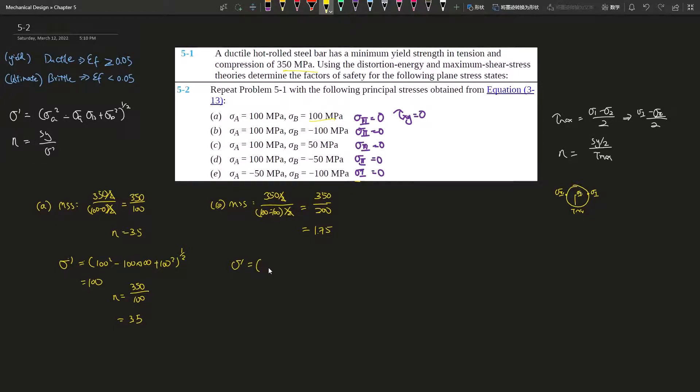Okay. Keep going with our calculation. Still, 100 squared minus 100 times negative 100, again, plus negative 100 squared, square root. That's going to give you 173.2 megapascals, and then n equals 350 divided by what we got, 173.2, right? And you will get a factor of safety, 2.02, and as you can tell, that this is bigger than this one, right? For me, for this one, they are the same, but for these two, they are different.